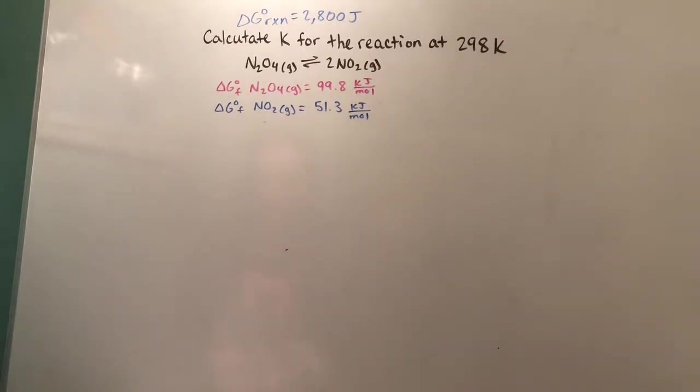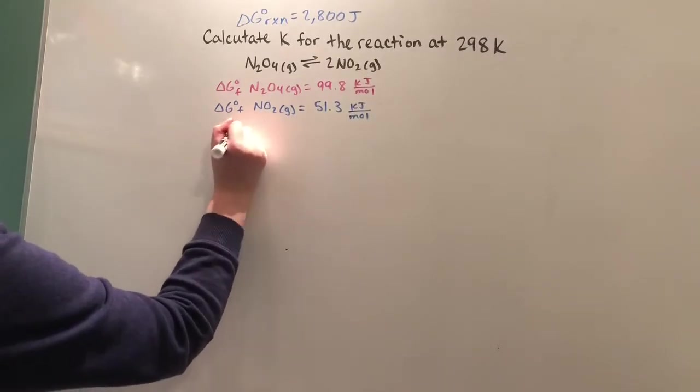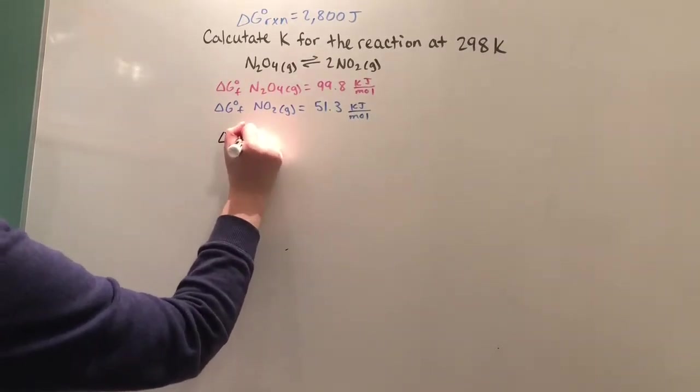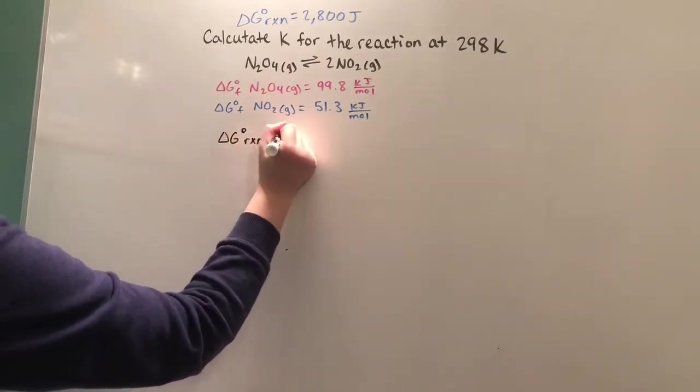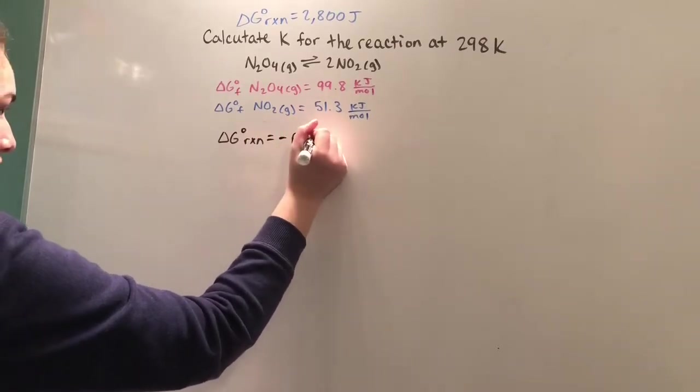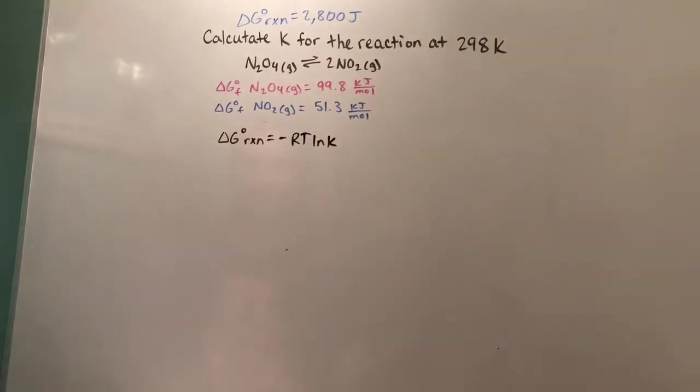Now how are we going to use that to find K? Well, we're going to use the equation ΔG of reaction equals negative RT ln K.